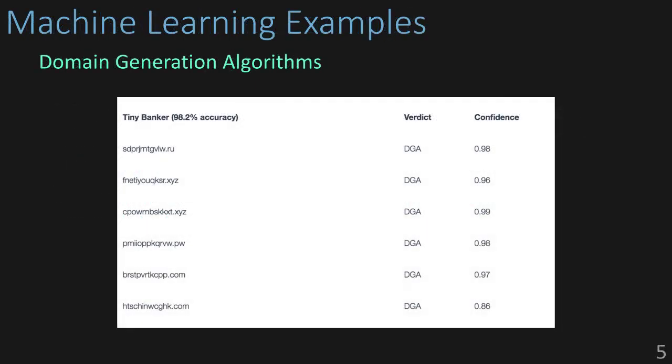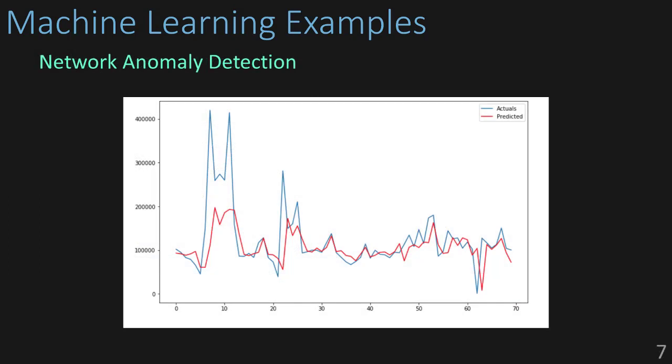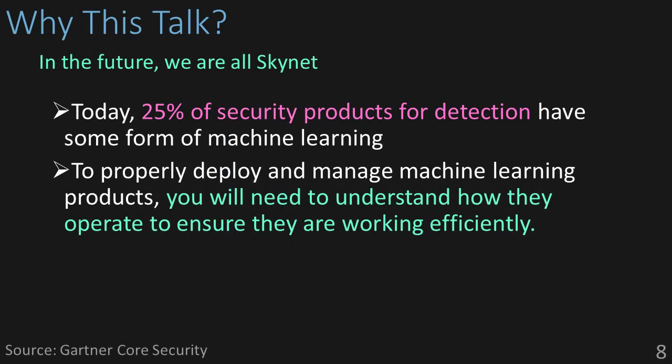Here are just a few examples. We can use machine learning to help us identify botnet traffic by classifying dynamically generated domain names of previously unknown command and control servers. We can use anomaly detection to build smart web application firewalls that can not only detect known attacks, but obfuscated ones as well. And we can use time series analysis to predict trends in network traffic to help us identify potentially hidden network threats. The real reason for this talk is that a number of these products already exist — as of today, over a quarter of security products for detection have some form of machine learning built in. So the challenge that security analysts are going to face is that to properly deploy and manage machine learning products effectively, you need to understand how they operate to ensure they're working efficiently.